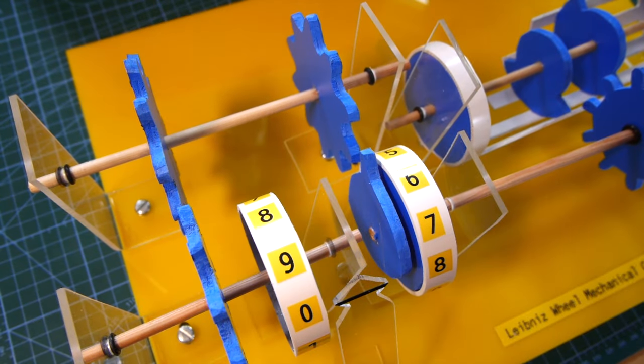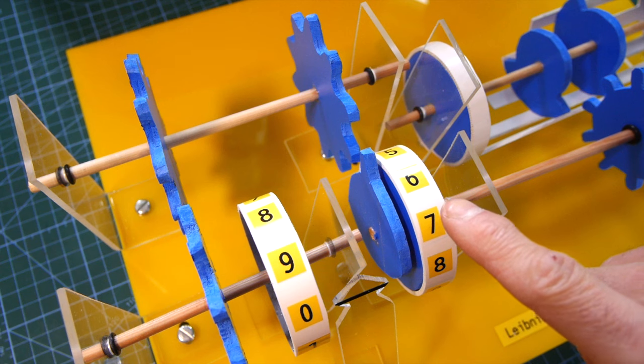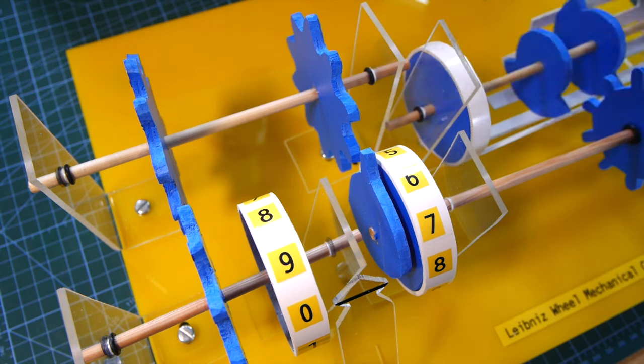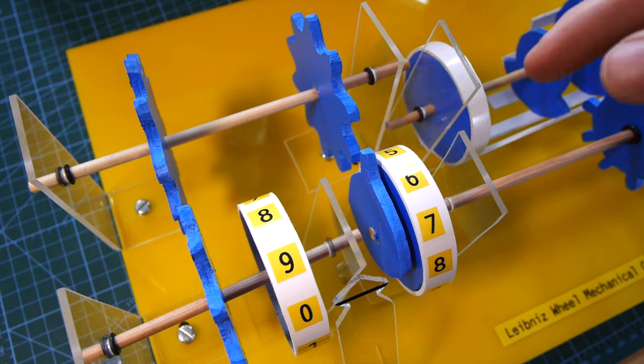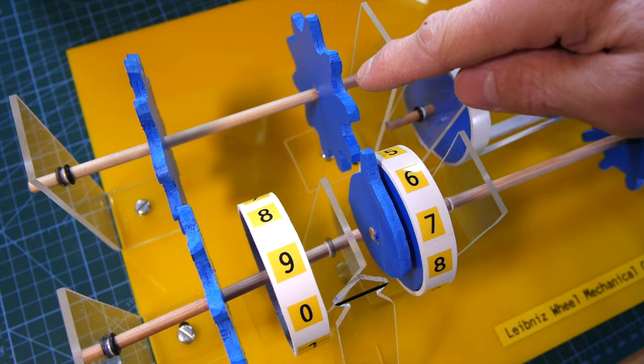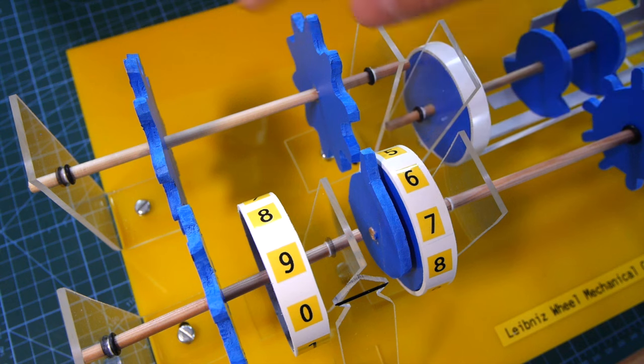Let's have a quick look at the carry mechanism so on the units drum I've got a gear here with just one tooth on it and that tooth is going to engage when it's been through a full rotation. So seven, eight, nine and then it needs to carry so that tooth will turn this gear through one position.